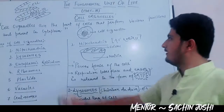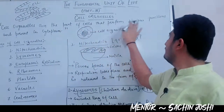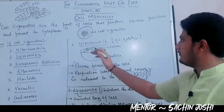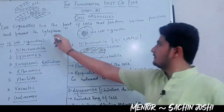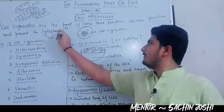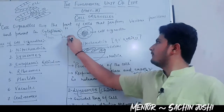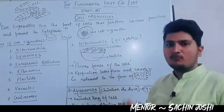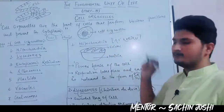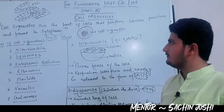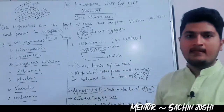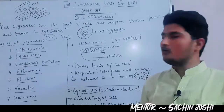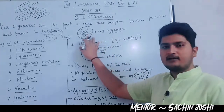What are cell organelles? Cell organelles are parts of cells that perform various functions and are present in the cytoplasm. Cytoplasm — cyto means cell and plasm means fluid — so the fluid present inside the cell is called cytoplasm. In this cytoplasm, various small cell organelles are present, and various functions of cells are controlled by these cell organelles.